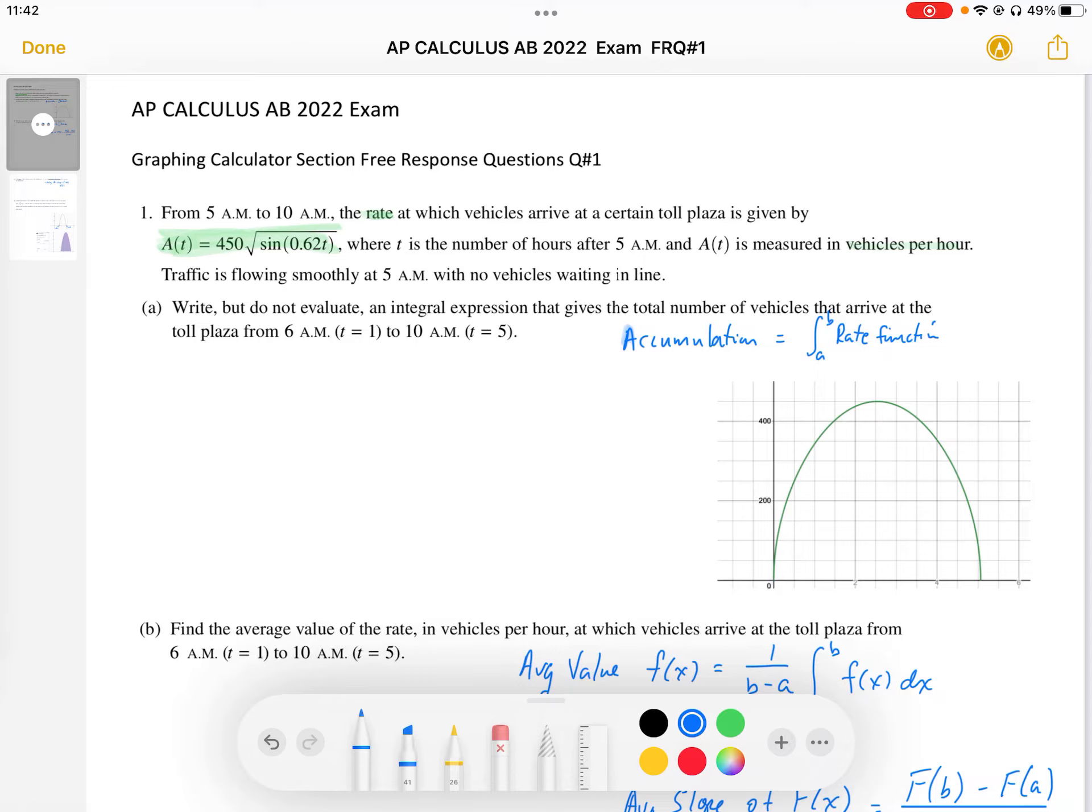So we'll write the total number as equal to the area under the curve from t equals 1 to t equals 5 of the a(t) function.